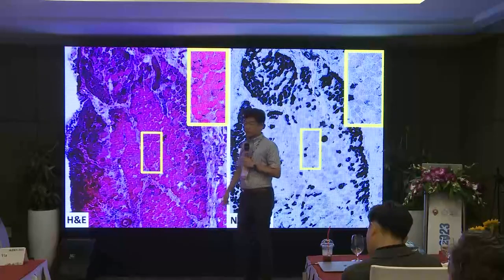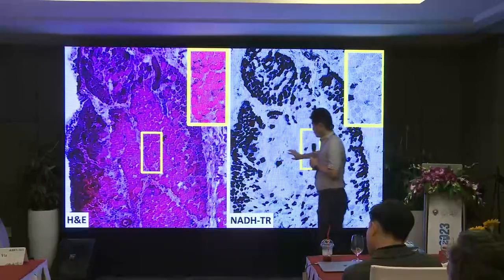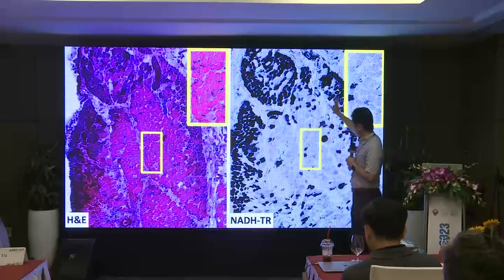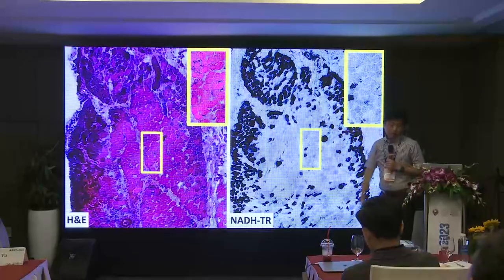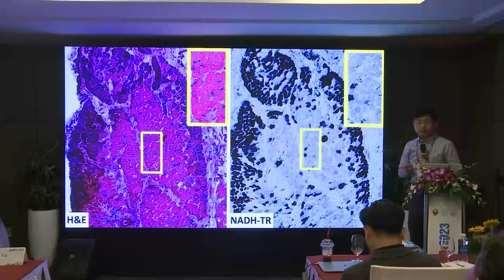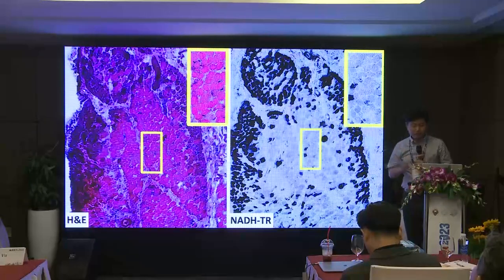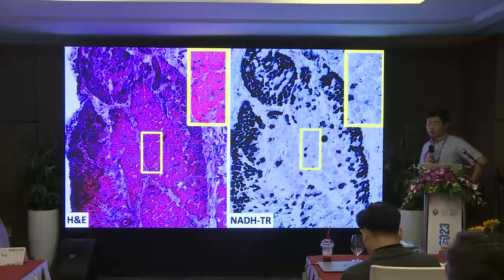Another form of necrosis: the whole area of muscle fibers is necrotic, and on NADH staining all activity is lost. They are all necrotic fibers but without macrophage invasion. This whole-area necrosis is believed to reflect micro-infarction of the muscle, and this is sometimes seen in dermatomyositis patients.